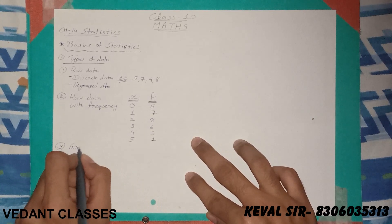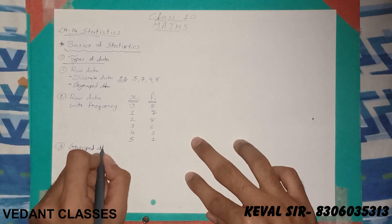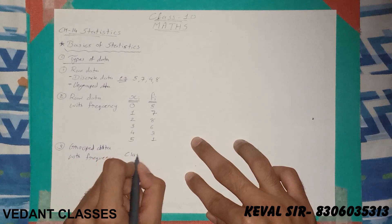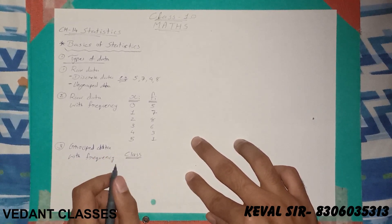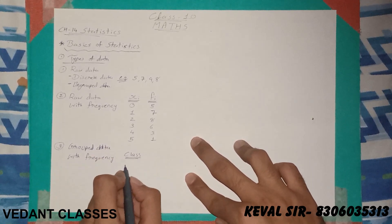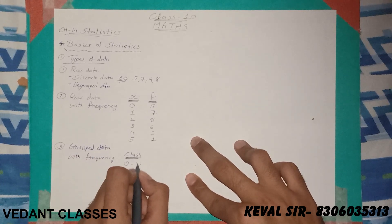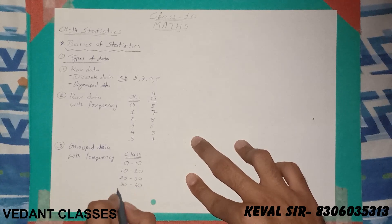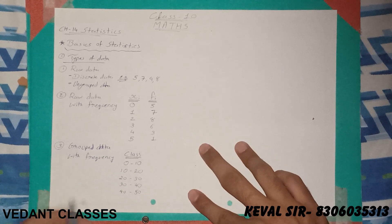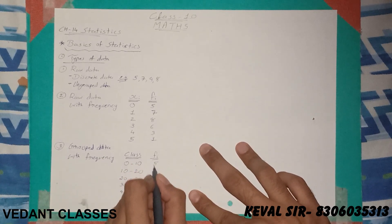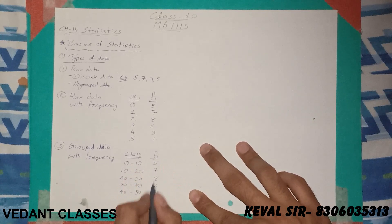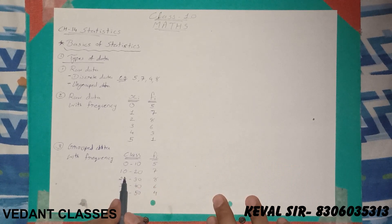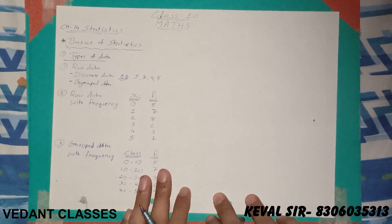The third type of data is grouped data with frequency. In grouped data, they give you a class interval. For example, a 50-mark test is conducted for 30 students, and we distribute the marks into classes. Whenever larger data is given, we use class intervals to simplify the data — that is called grouped data. For example, students who scored 0 to 10 marks: 5 such students; 10 to 20 marks: 7 such students. This is called grouped data with frequency.